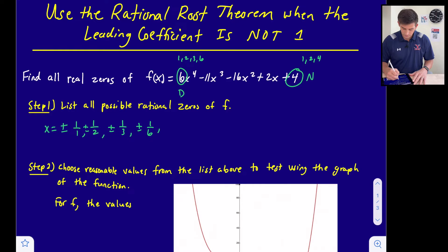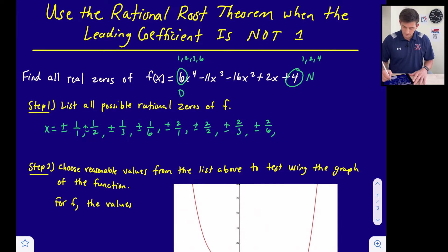Continuing with numerator 2: plus or minus 2/1, plus or minus 2/2, plus or minus 2/3, plus or minus 2/6. And with numerator 4: plus or minus 4/1, plus or minus 4/2, plus or minus 4/3, and plus or minus 4/6.